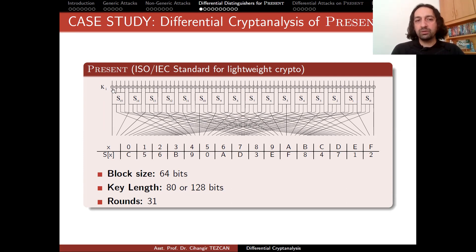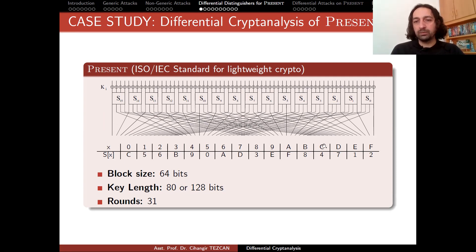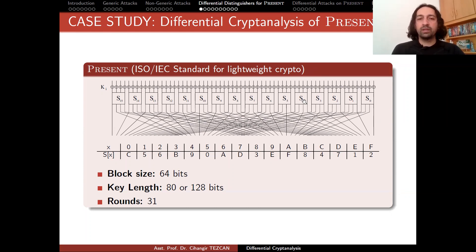You start with an initial key XORed with 64 bits, then apply the substitution layer — an application of an S-box 16 times in parallel. All of these S-boxes are the same, with a 4-bit input replaced by a 4-bit output according to the table. The bits are then permuted: for instance, the rightmost bit stays in the same place, but the first bit goes to position 16. This constitutes a single round of PRESENT.